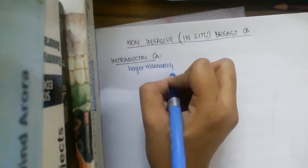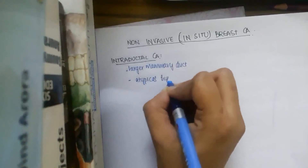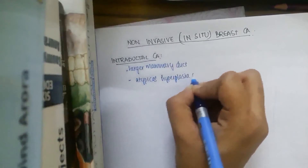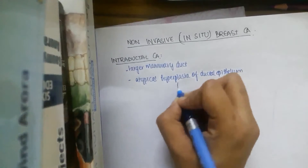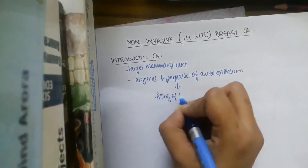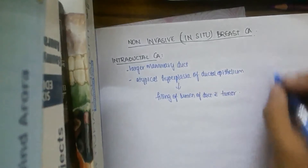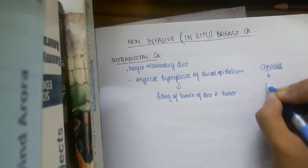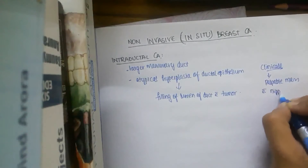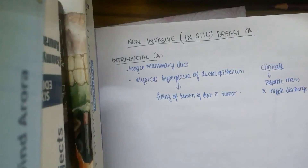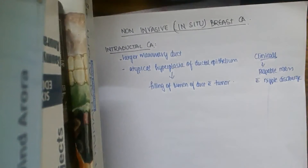The tumor begins as atypical hyperplasia of the ductal epithelium, followed by filling of the lumen of the duct with tumor cells. Clinically, it presents with a palpable mass and nipple discharge. Approximately a quarter of patients with this carcinoma can be treated by excisional biopsy alone.